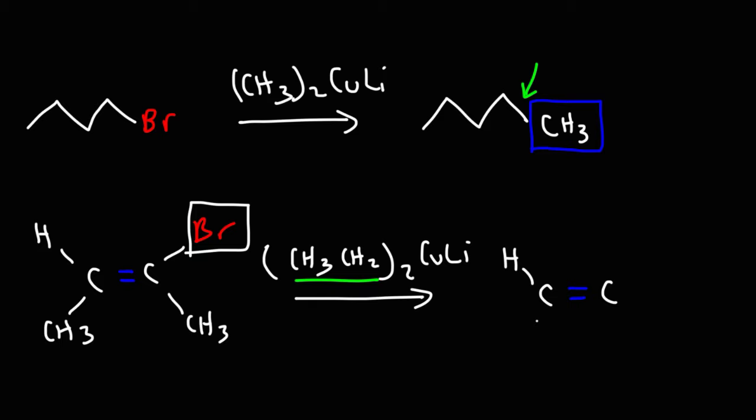And the cool thing about this reaction is it's stereospecific. The configuration of the double bond is retained—it doesn't change. But all we need to do to get the product is simply replace the bromine group with an ethyl group, and so it works with vinylic halides.